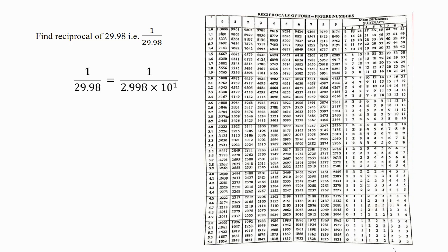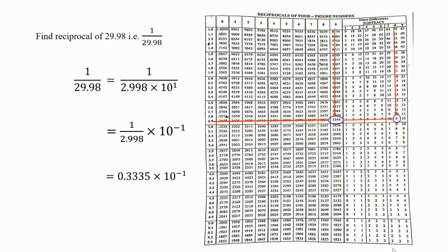Now I transfer 10 raised to 1 into the numerator, which becomes 10 raised to minus 1. Now let's find the reciprocal of 2.998. For that I consider 2.9 in the very first column. Along the 2.9 row I observe the value under the 9th column. Along the same row I observe the mean difference under the 8th column and subtract that mean difference from 3344. So the value comes out as 0.3335 into 10 raised to minus 1. Multiplying by 10 raised to minus 1, the value is 0.03335.